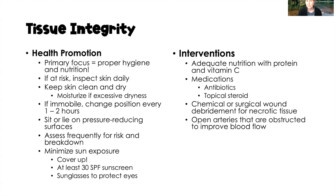Once we already have impaired tissue integrity, interventions include adequate nutrition — adequate protein and vitamin C, as well as all other nutrients for healing. Medications may include antibiotics, whether oral, IV, or topical creams, and we might also use oral or topical steroids in healing. The patient may also need chemical or surgical wound debridement — as skin dies, we need to debride away that dead tissue to promote healing of the non-necrotic tissue underneath.